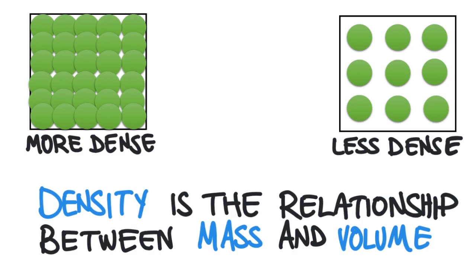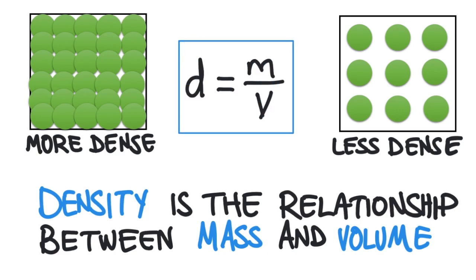Density is a relationship between the mass and the volume of an object. Mathematically, it's a ratio of the mass of an object to its volume, and it's represented by this equation.